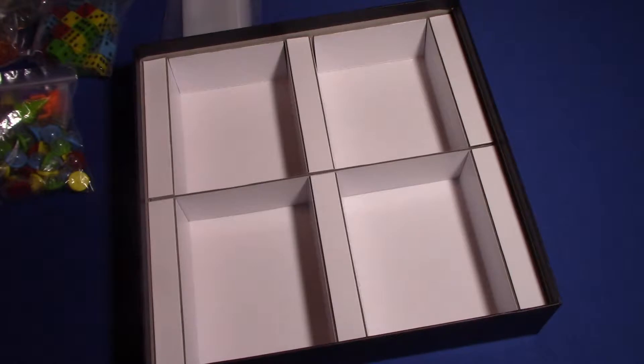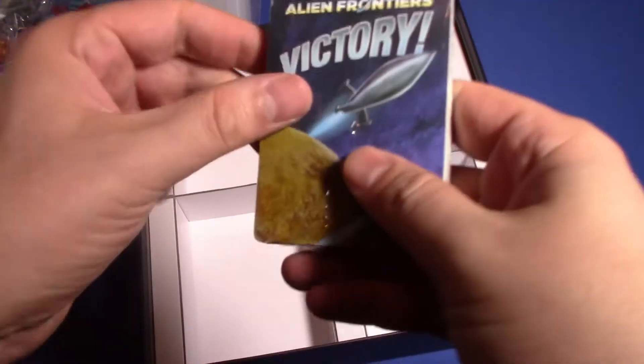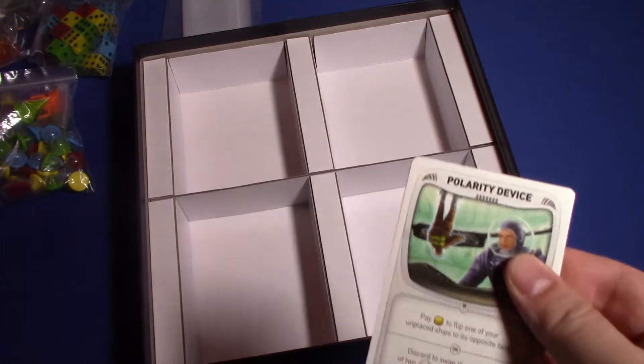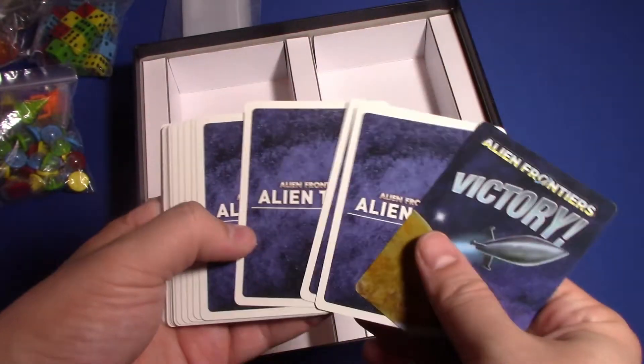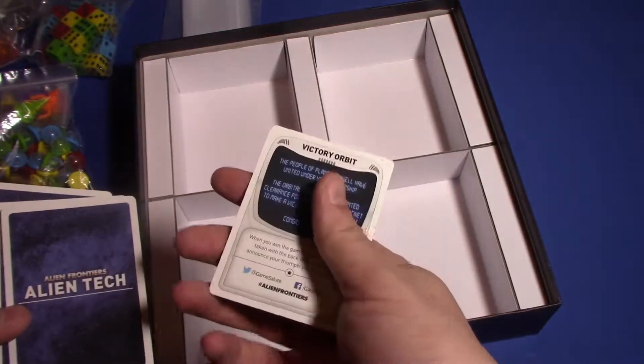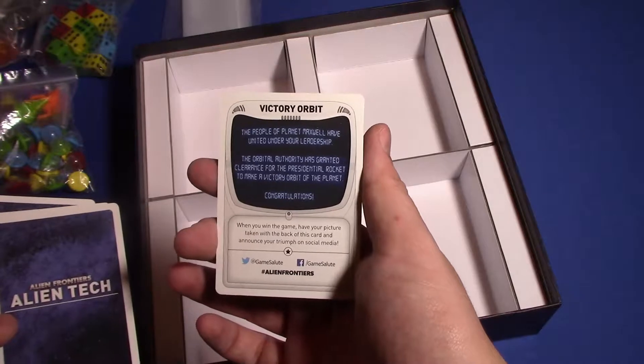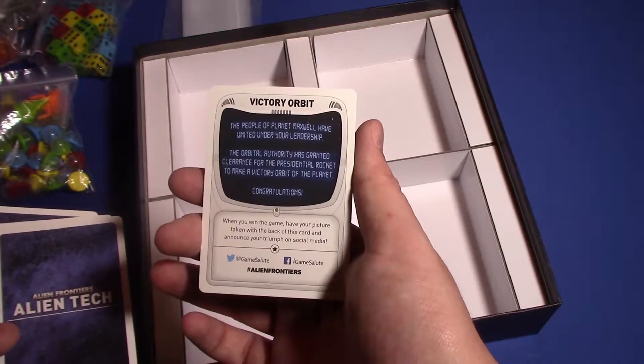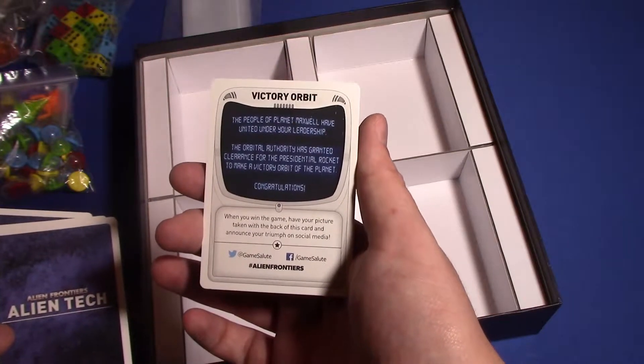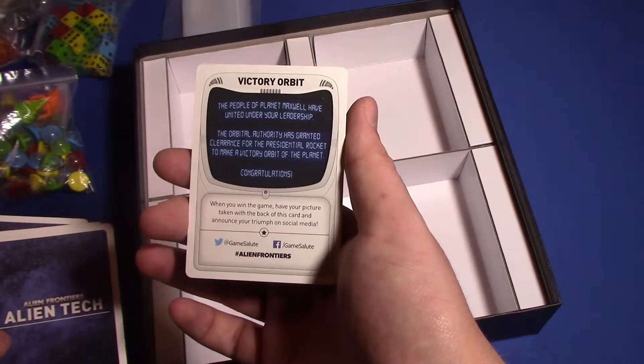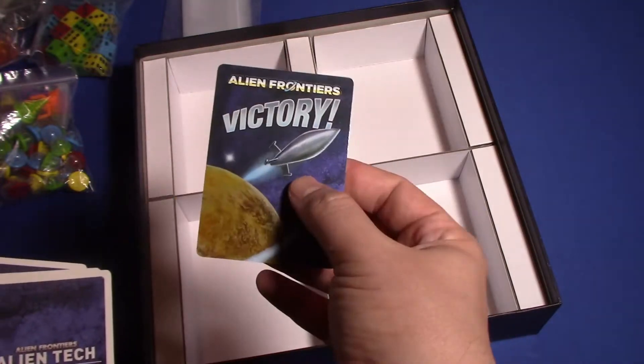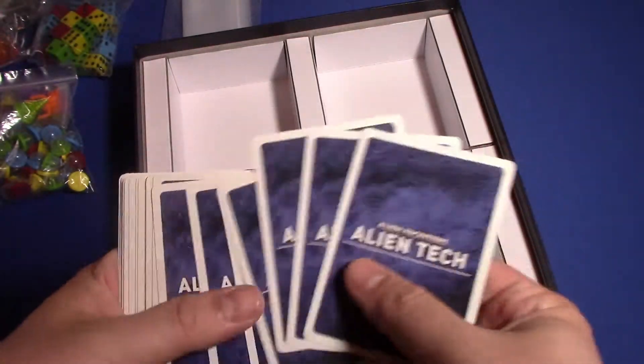Alien Frontiers. It's not a ton of cards. We see the back of it. Oh, there's one here. I don't know what that is. Victory Orbit: The people of Planet Maxwell have united under your leadership. The Orbital Authority has granted clearance for the residential rocket to make a victory orbit of the planet. Congratulations. When you win the game, have your picture taken with the back of this card and announce your triumph on social media. Well, that's kind of cute, huh? Interesting.